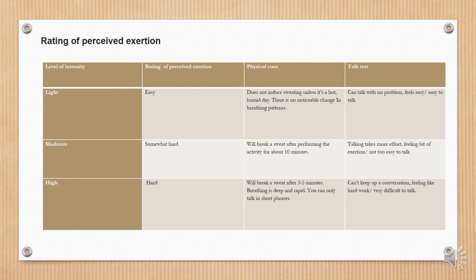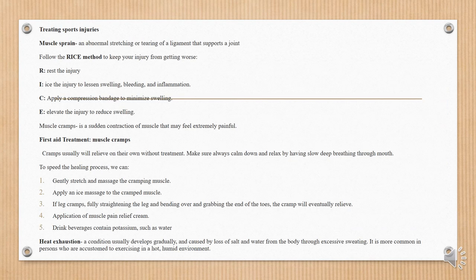Levels of intensity: rating of perceived exertion, physical cues, and the talk test. Treating sports injuries — a sprain is an abnormal stretching or tearing of a ligament that supports a joint. Follow the RICE method to keep your injury from getting worse: R — rest the injury; I — ice the injury to lessen swelling, bleeding, and inflammation; C — apply a compression bandage to minimize swelling; E — elevate the injury to reduce swelling.